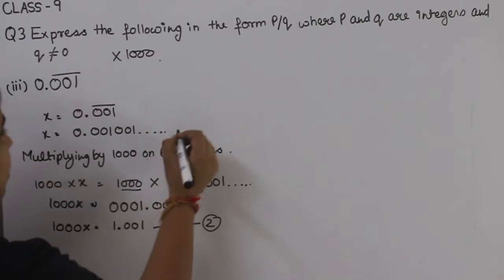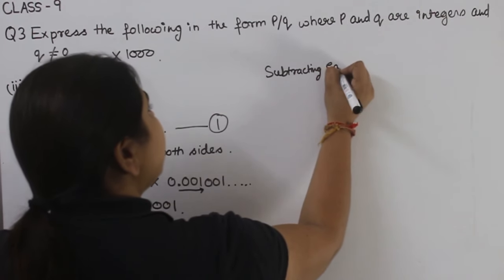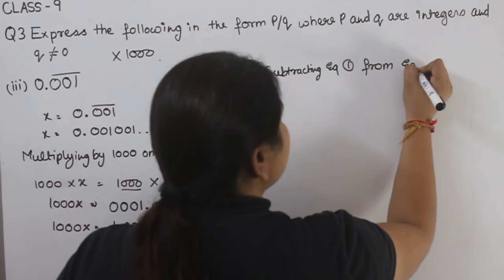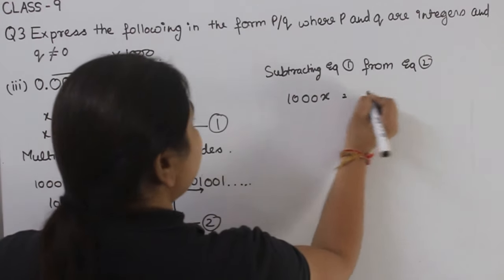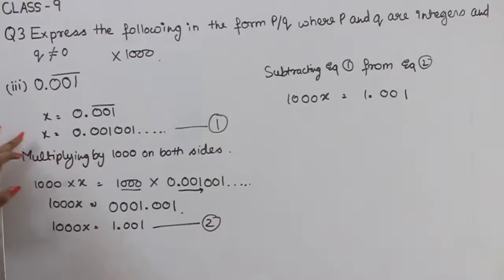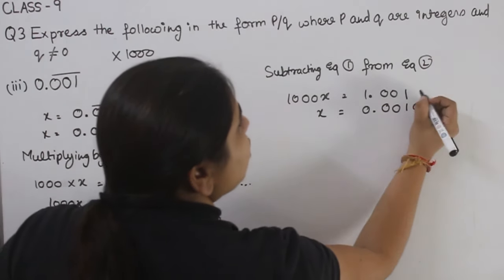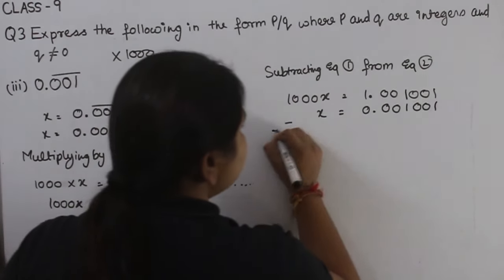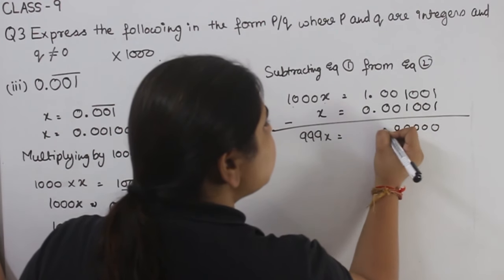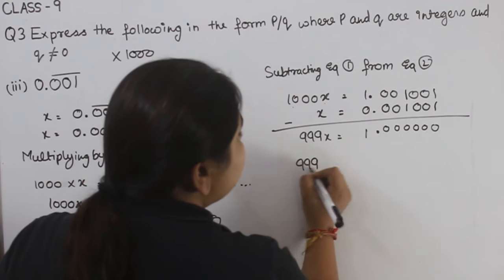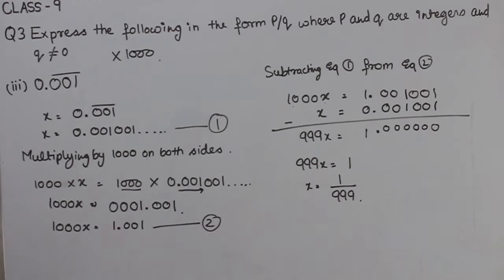This is equation number 2 and equation number 1. Subtracting equation number 1 from equation number 2: 1000x minus x is equal to 999x. The repeating decimals cancel, leaving 999x equal to 1. So x is equal to 1 by 999. This is the solution of part 3.